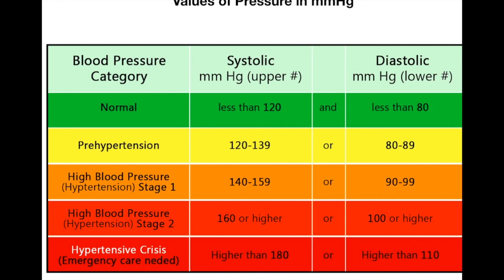In pre-hypertension, the systolic pressure is 120 to 139 mmHg and diastolic pressure is 80 to 89 mmHg. After that there are three stages: high blood pressure stage one, high blood pressure stage two, and hypertensive crisis — in that case you need emergency care.